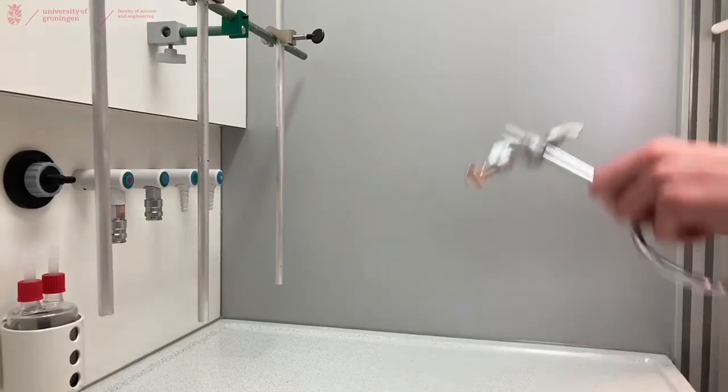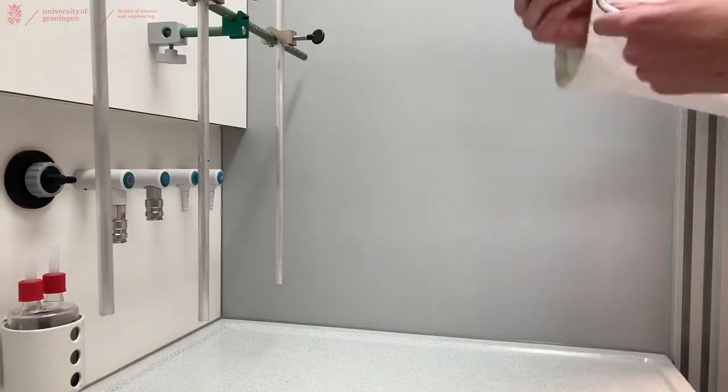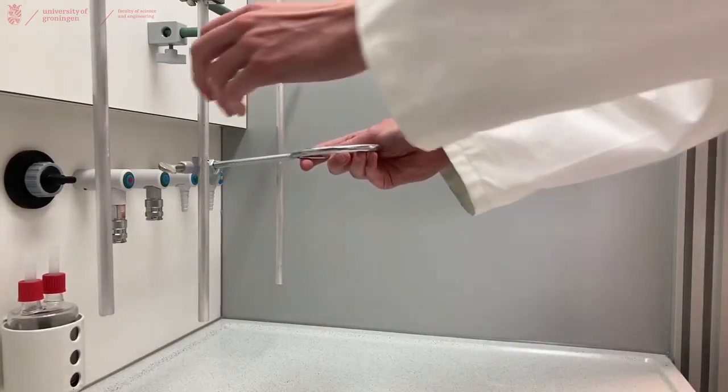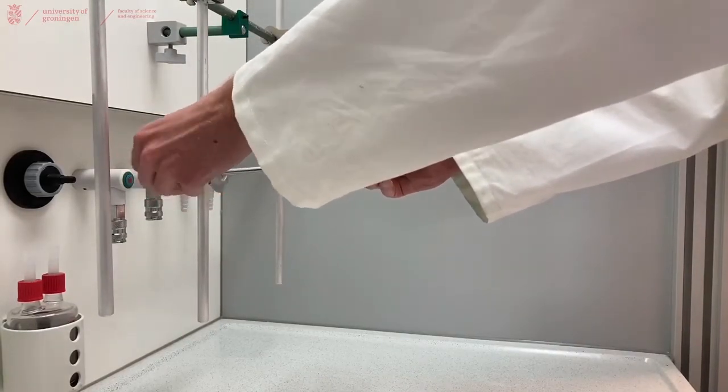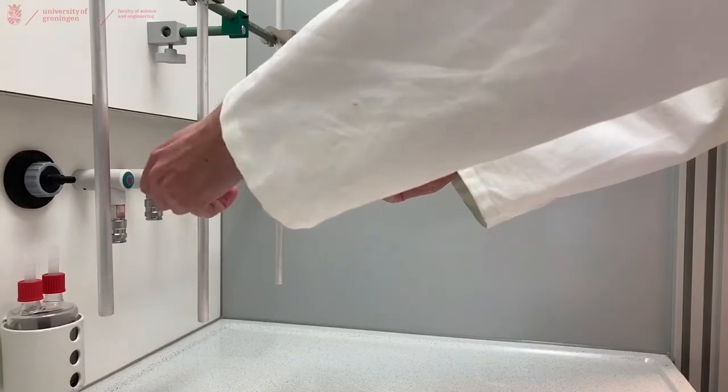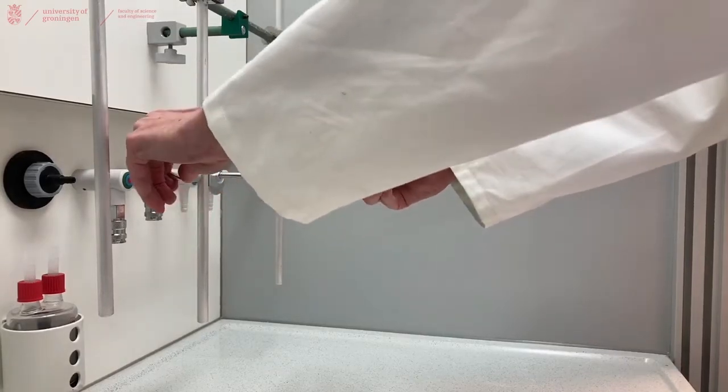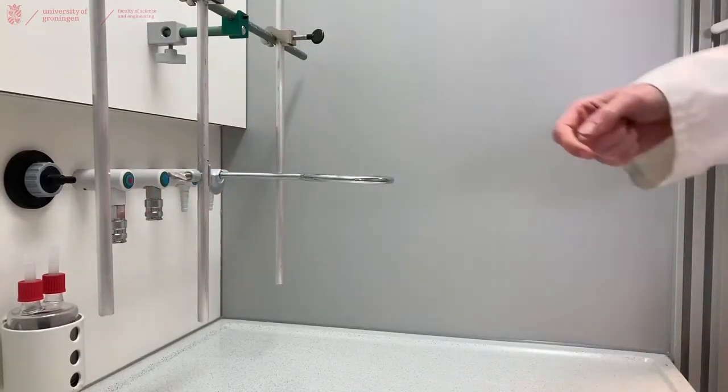To perform a separation, you will need one metal ring to hold your separator funnel. And you need to attach this to the fume hood.